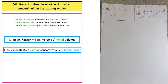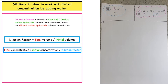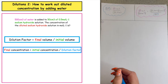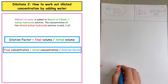In today's video, we are going to be looking at dilution, and that's how to work out the concentration of a substance which has been diluted by adding water. In this first example, we've got 500 centimetres cubed of water which is added to 50 centimetres cubed of a 0.5 moles per litre sodium hydroxide solution.